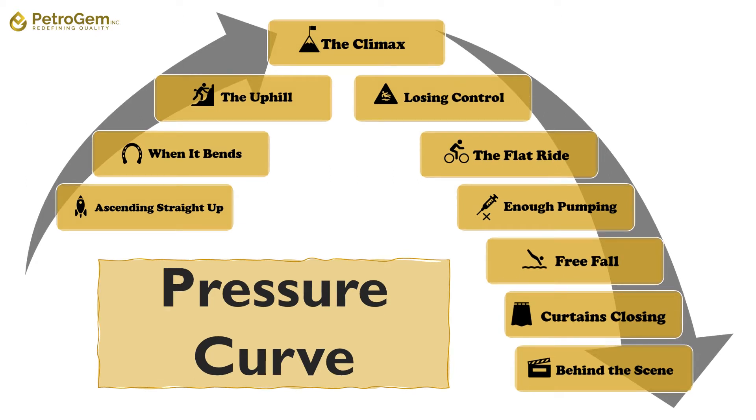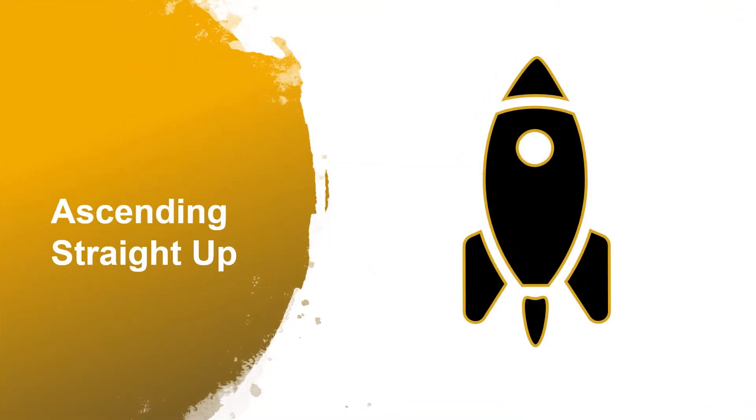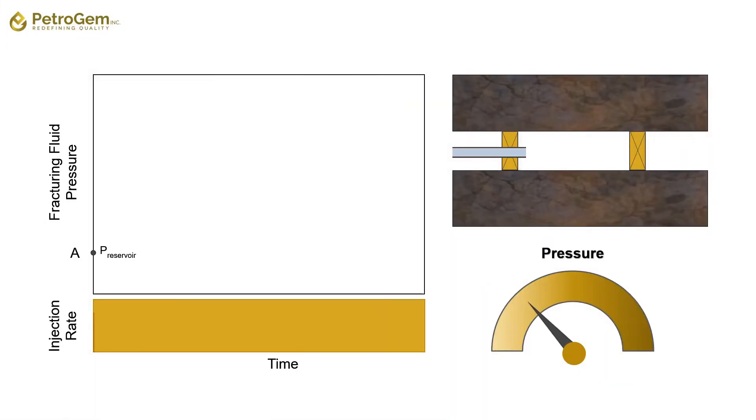Ascending straight up. After injection started, the low permeability target interval is usually intact with no fractures to let the injected fluid escape. At this condition, by continuing injection in the isolated volume of the well, the fluid will be compressed and as a result pressure has to increase.